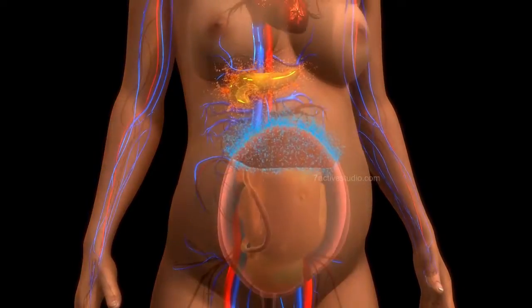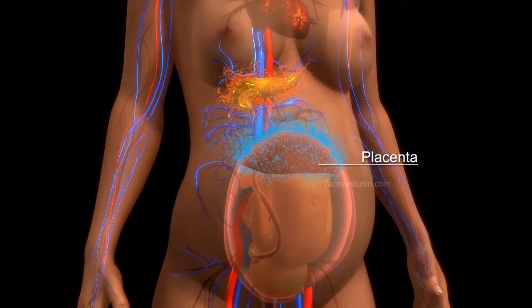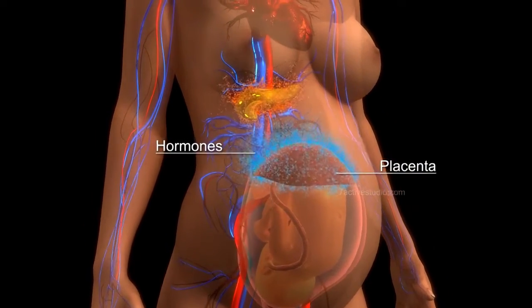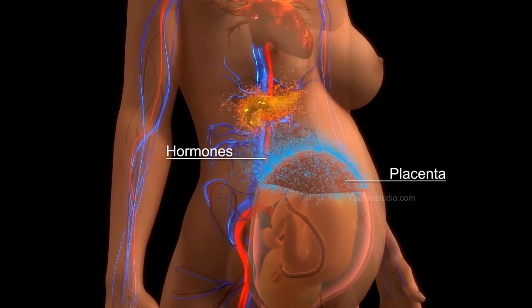In gestational diabetes mellitus, the placenta secretes hormones which interfere with this insulin uptake by the cells.